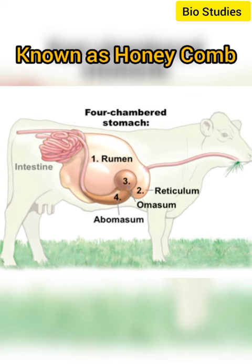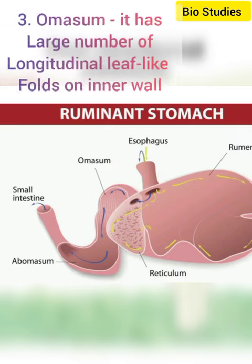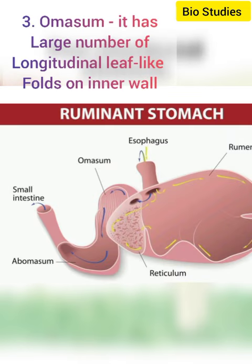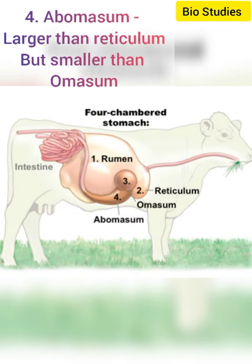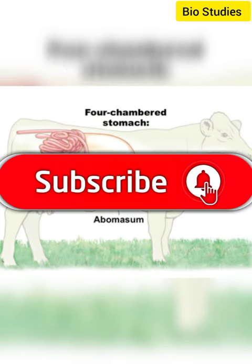called the honeycomb. Third is the omasum. It has a large number of longitudinal, leaf-like folds on its inner wall. Fourth is the abomasum. It is larger than the reticulum but smaller than the omasum.